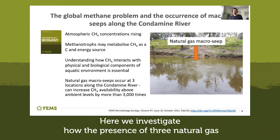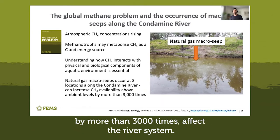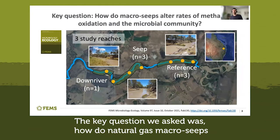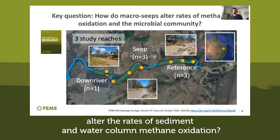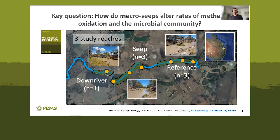Here we investigate how the presence of three natural gas macro seeps along the Condamine River, which increased methane concentrations by more than 3000 times, affect the river system. The key question we asked was how do natural gas macro seeps alter the rates of sediment and water column methane oxidation, and how does the microbial community abundance and composition vary in relation to these macro seeps.